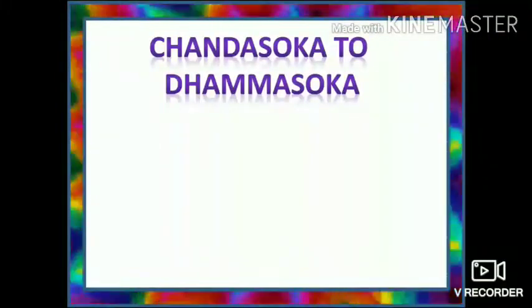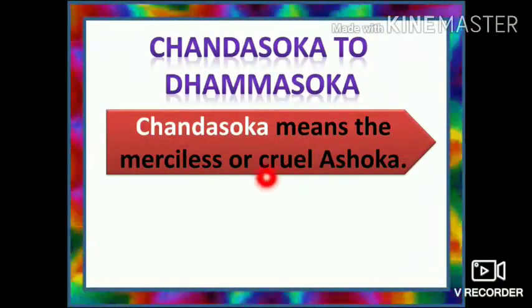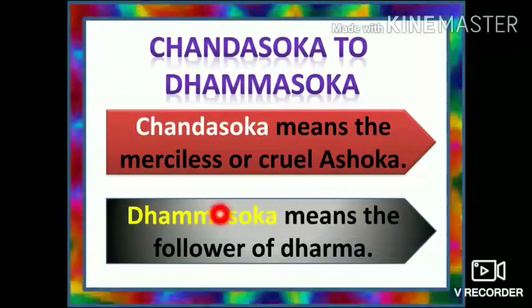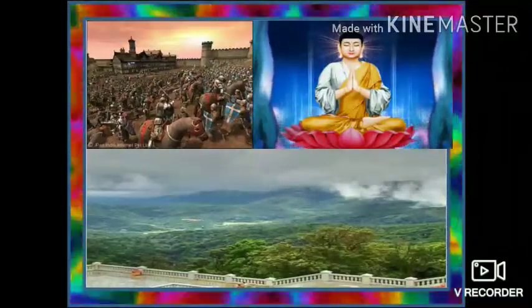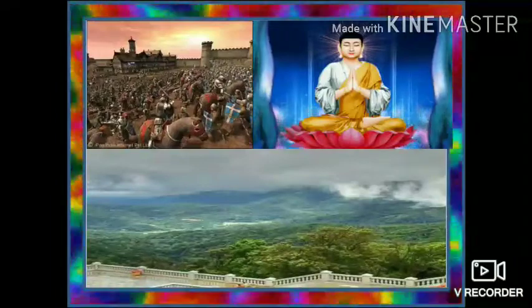Now let's see about Chanda Ashoka to Dhamma Ashoka. Chanda Ashoka means the merciless or cruel Ashoka, while Dhamma Ashoka means the follower of Dharma. In the Kalinga war, many people died. Ashoka got very worried and decided not to fight anymore. After the Kalinga war, Ashoka did not wage any battle. He converted to Buddhism, followed its principles, took Dharma Yatras to many places and preached the principles of Buddhism. He followed the principle of Dharma inscribed in the 12th rock edict.